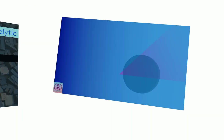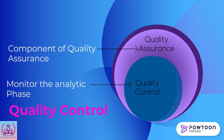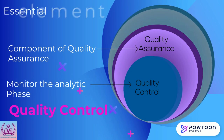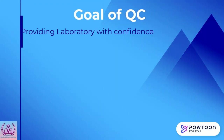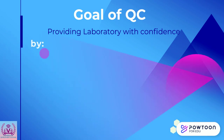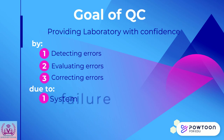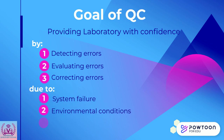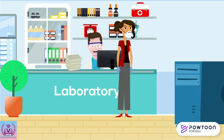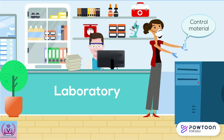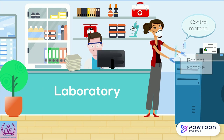Quality control is a component of quality assurance used to monitor the examination or analytic phase of testing and is an essential element of the quality management system. The goal of quality control is to provide the laboratory with confidence by detecting, evaluating, and correcting errors due to test system failure, environmental conditions, or operator performance before patient results are reported. This is done by examining control materials of known substances along with patient samples to monitor the accuracy and precision of the complete analytic process.